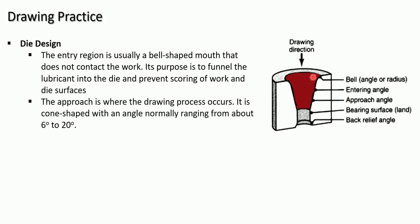After the entry region, there is a region called the approach, where the actual drawing process occurs — where contact between the draw die and the workpiece takes place. The approach is cone shaped with an angle normally ranging from 6 to 20 degrees.